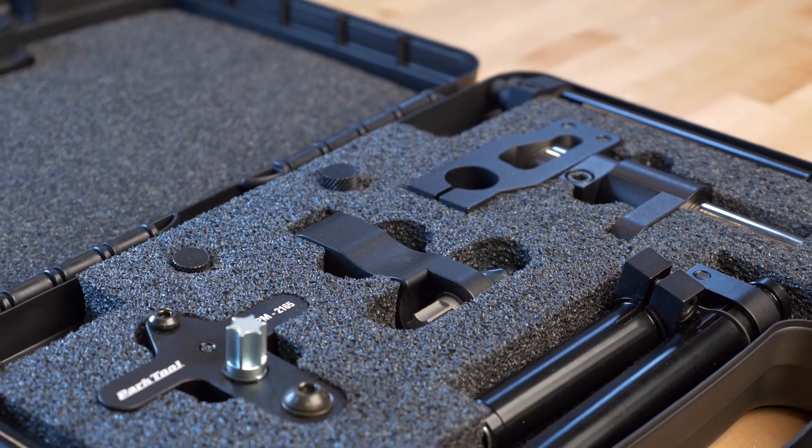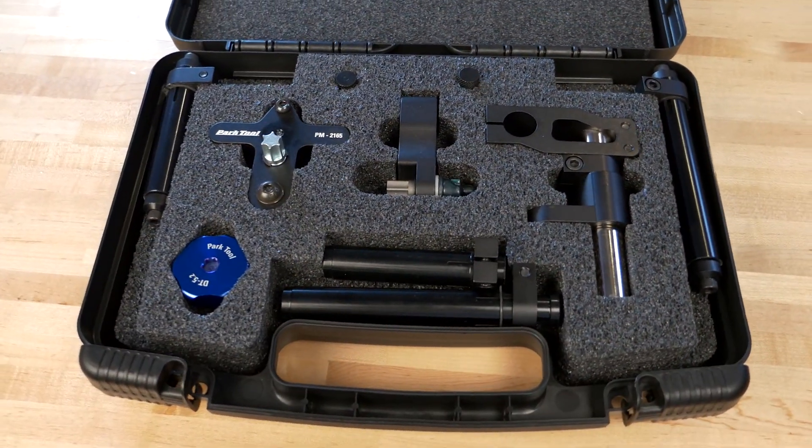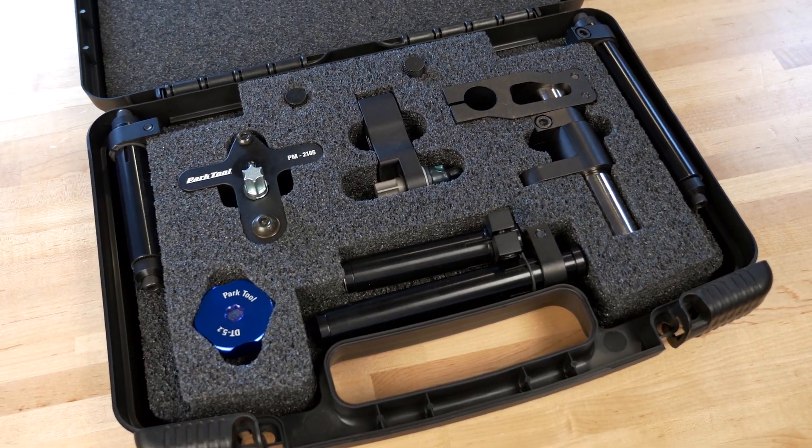The Park Tool DT 5.2 Disc Brake Mount Facing Set is a precision tool system engineered for machining disc brake mounts.